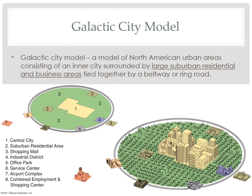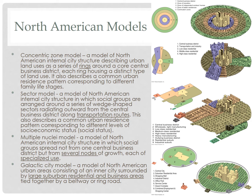Examples of the galactic city model include Tyson's Corner in Virginia outside Washington D.C., Irvine, California outside Los Angeles, and perhaps the best example, Phoenix, Arizona. These models show the evolution of North American cities as cities deindustrialized and as suburban flight and widespread automobile use grew. They do have an economic bias and do not account for other important factors, like how race and ethnicity influence urban land use change.